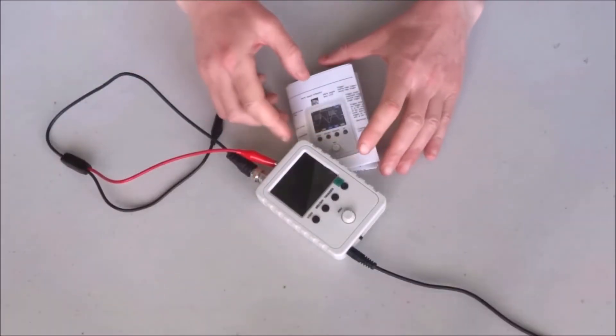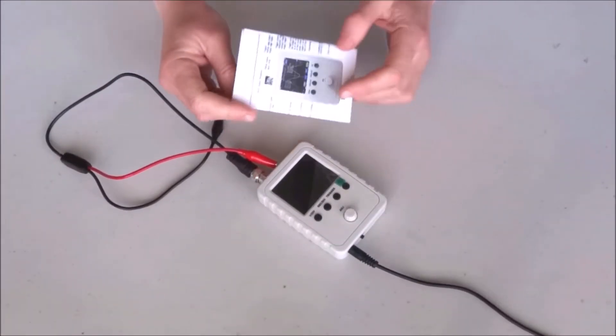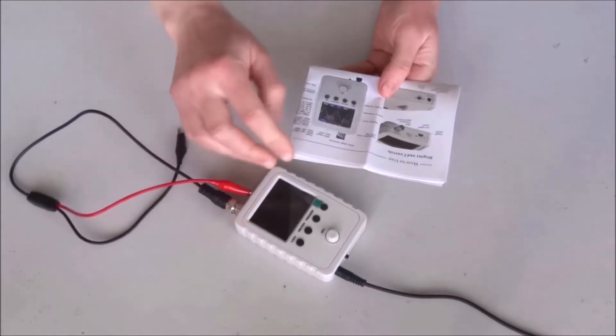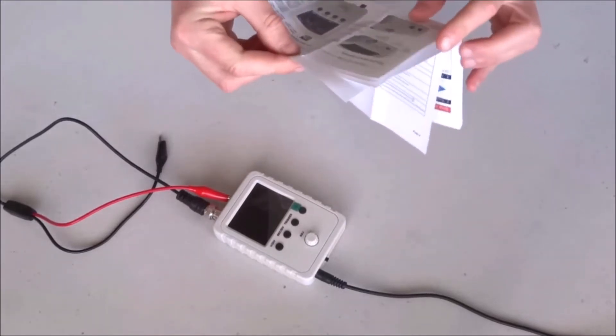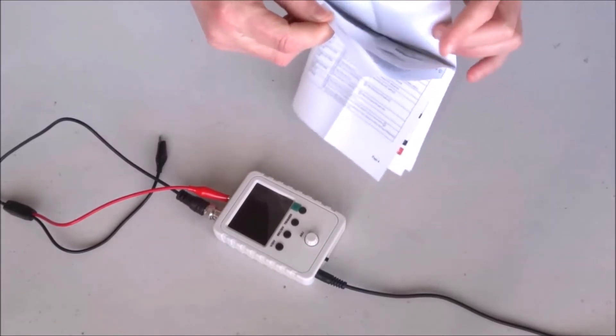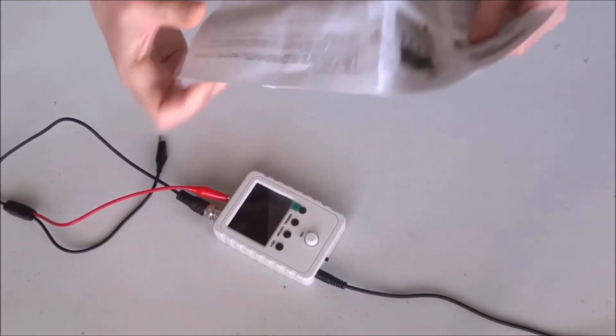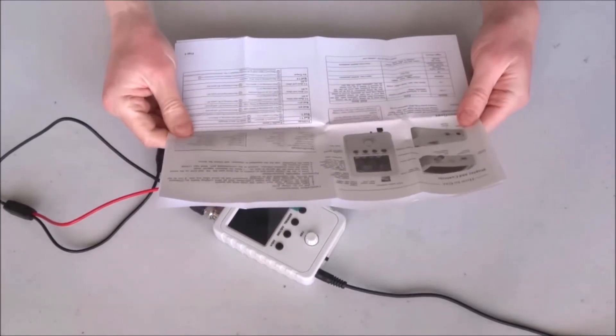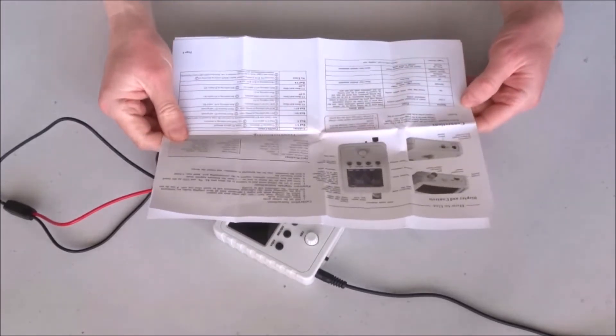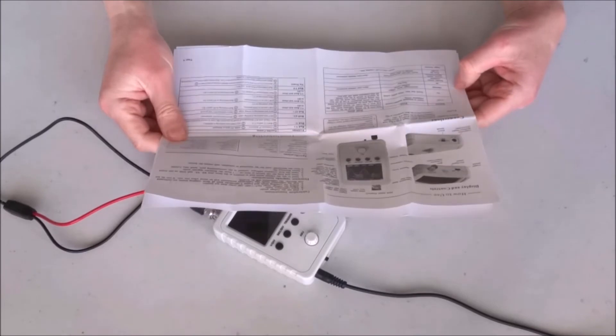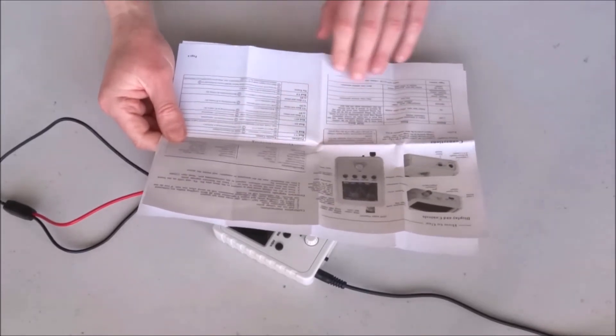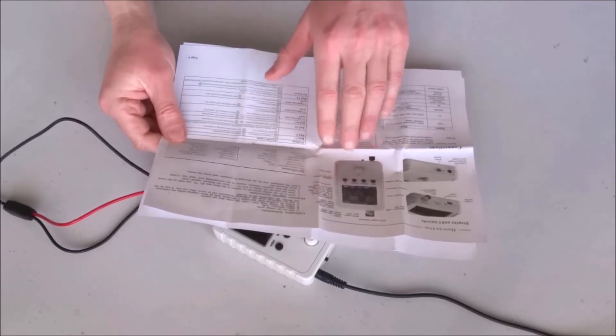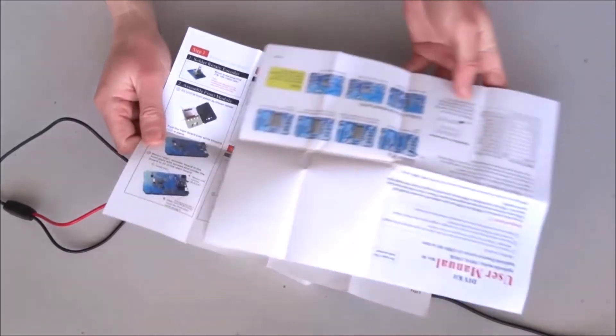The oscilloscope also came with this instruction manual. So let's take a look and see what's inside. So there are some basic instructions on how to power it and the different functions on this page.